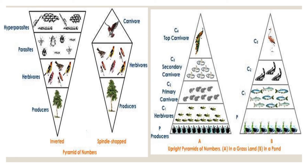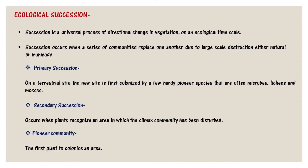The pyramid of energy reflects the laws of thermodynamics with conversion of solar energy to chemical energy and heat energy at each trophic level, with loss of energy depicted at each transfer to the next trophic level. Hence the pyramid of energy is always in an upright position.